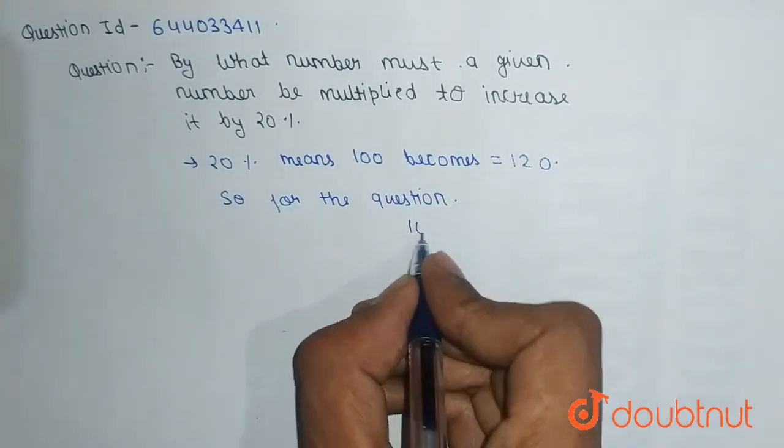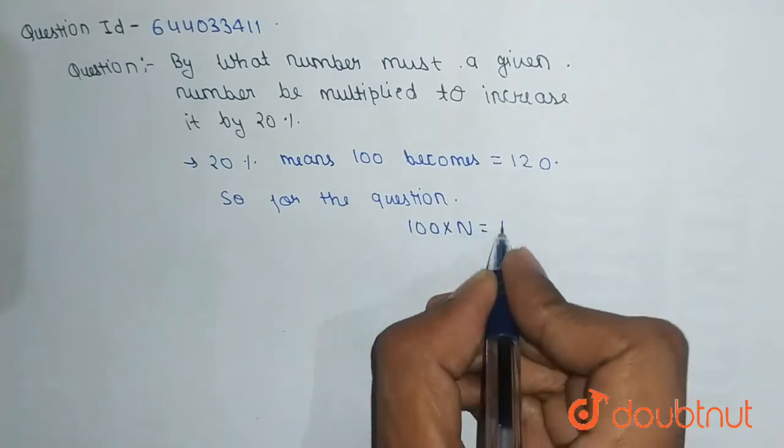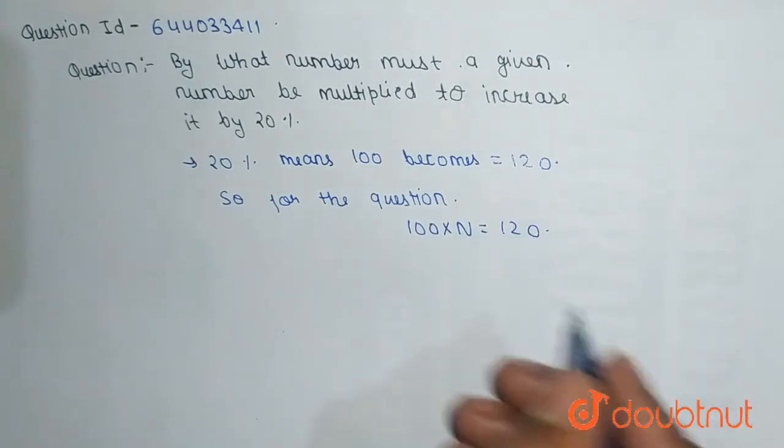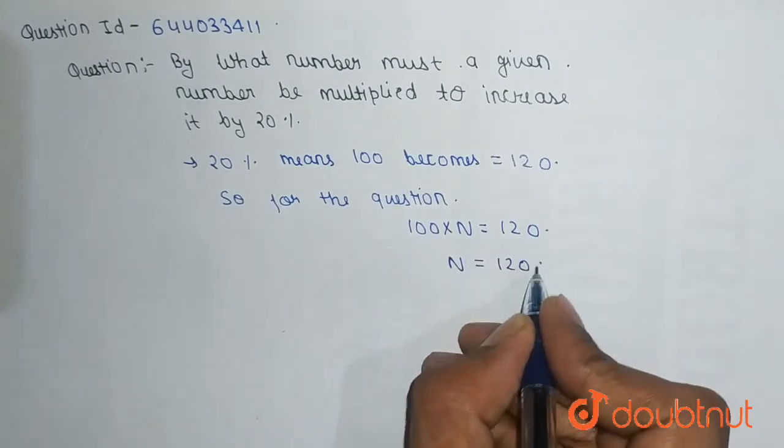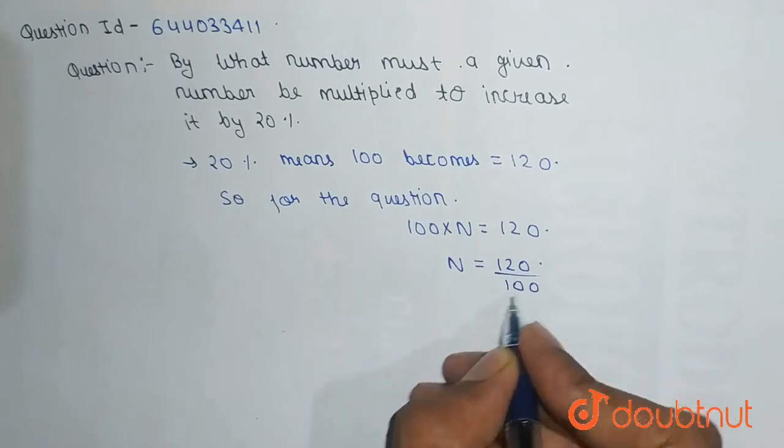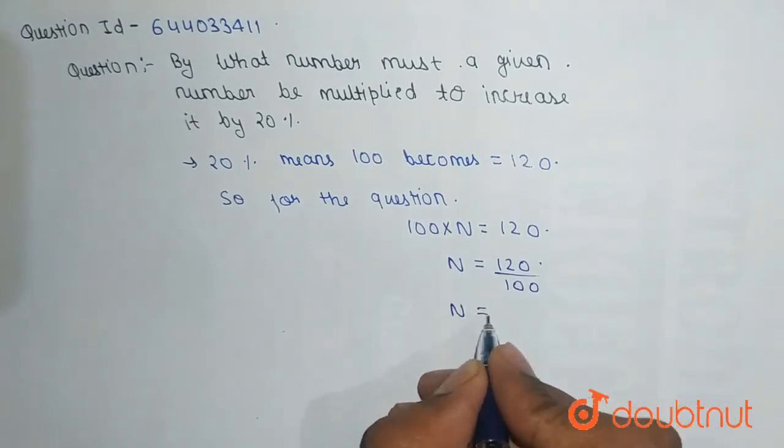100 × N = 120, then N = 120/100, so N equals